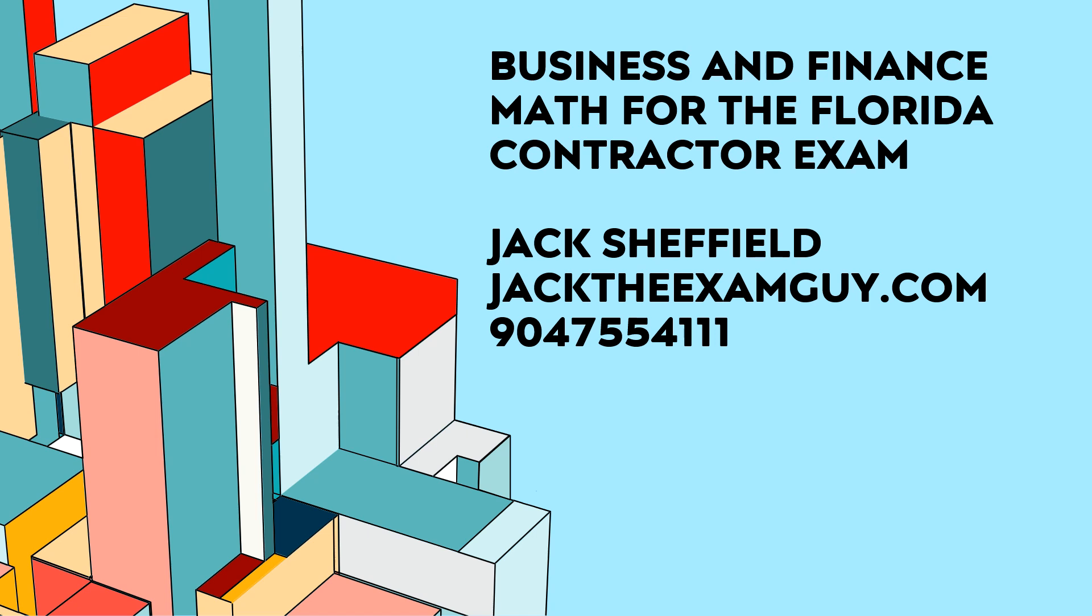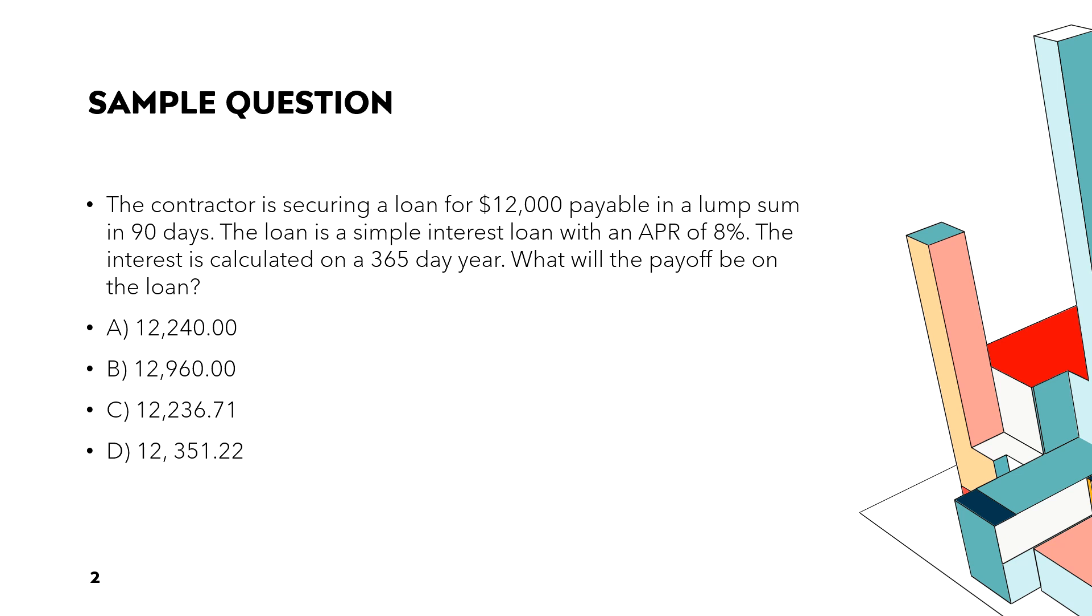So, what I've done today is I'm giving you a sample question. You can expect to see something very similar to this on the exam. The question reads, the contractor is securing a loan for $12,000 payable in a lump sum in 90 days. The loan is a simple interest loan with an APR of 8%. The interest is calculated on a 365-day year. What will the payoff be on the loan?